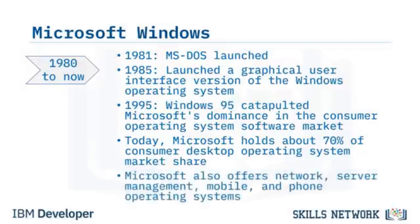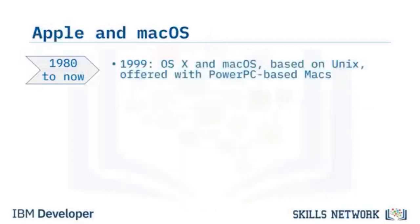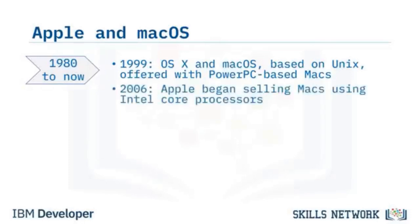Microsoft also offers network, server management, mobile, and phone operating systems. Apple, with its OSX and Mac OS based on Unix, began its foray into the operating system market in 1999 with PowerPC-based Macs. In 2006, Apple began selling Macs using Intel Core processors.